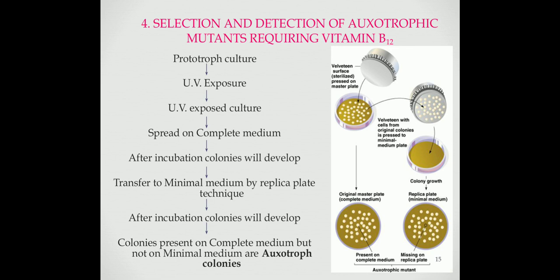The fourth example is selection and detection of auxotrophic mutants requiring vitamin B12. The selection of auxotrophic mutants can also be done using the replica plate technique. Prototropic cell suspension is first exposed to mutagen. The mutagen-exposed culture is then suitably diluted and spread on complete medium. After incubation, colonies will develop on complete medium. The colonies are then transferred to minimal medium by replica plate technique. After incubation, some colonies will also develop on minimal medium. Colonies which are present on complete medium but absent on minimal medium are colonies of auxotrophic mutants.